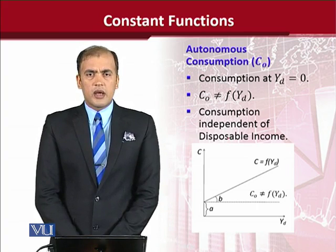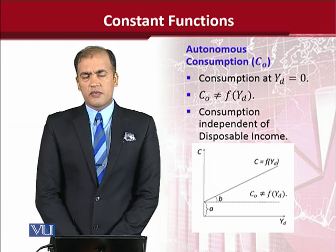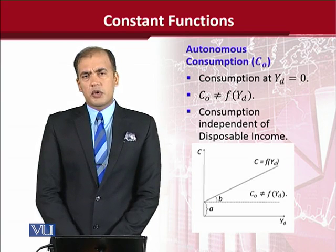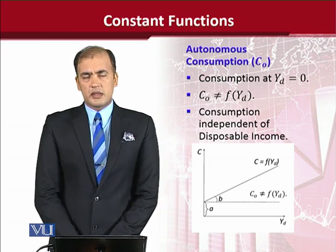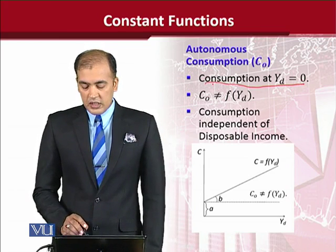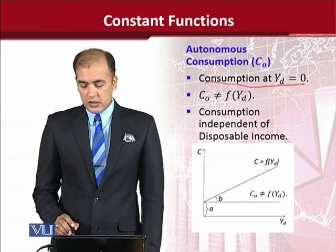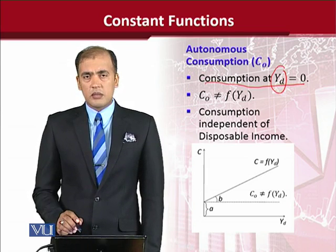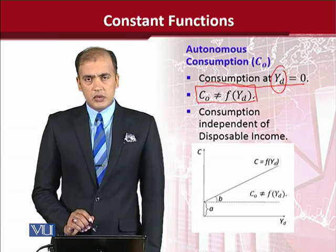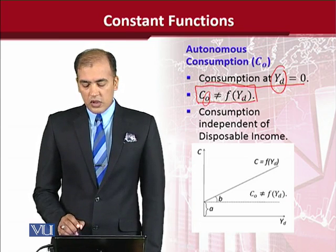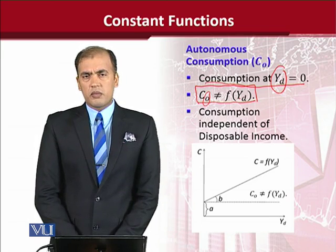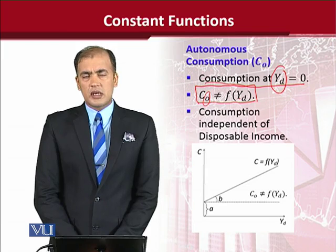Now we are going to take some examples from economic theory. A very famous constant function in economics is autonomous consumption. The component of consumption which is independent of the level of income is represented as consumption at yd = 0, where yd is the disposable income — that is, income after taxation. This function explains the whole story: autonomous consumption is not a function of disposable income. A very small function can explain the whole phenomenon, which is the beauty of mathematics in economics.